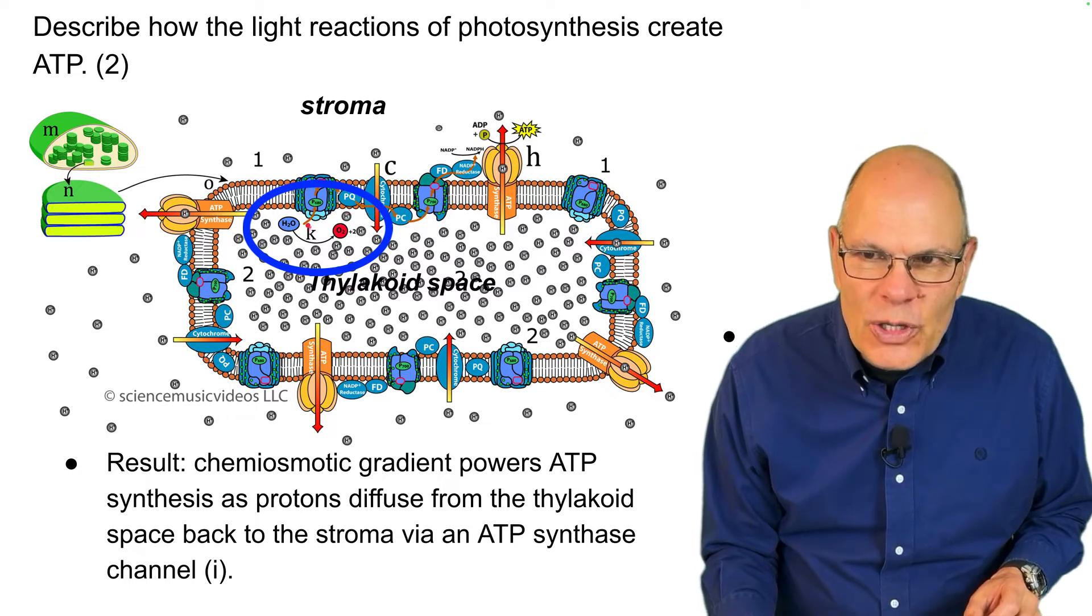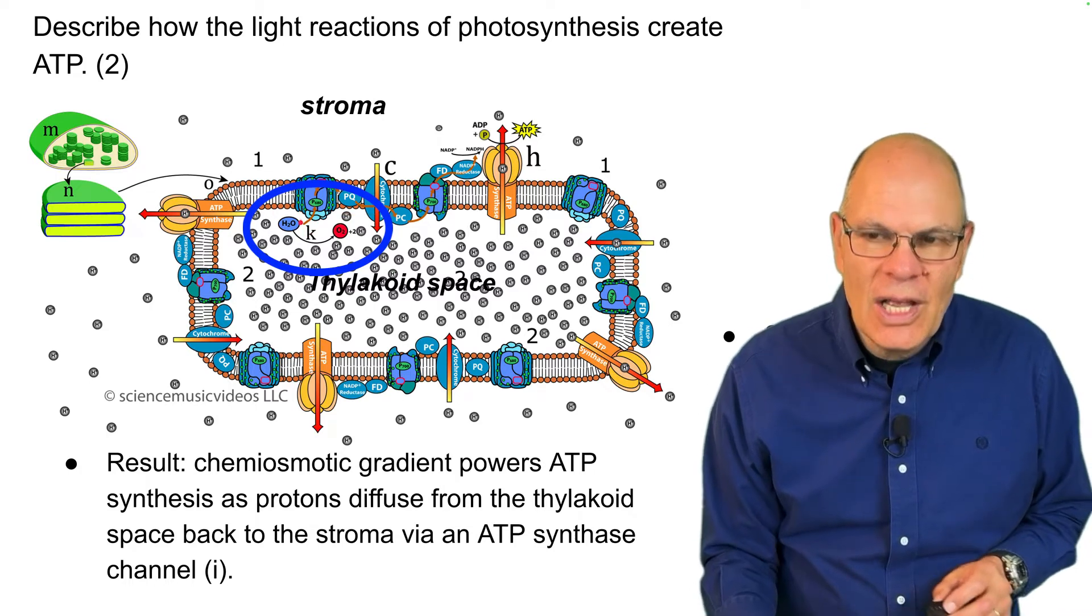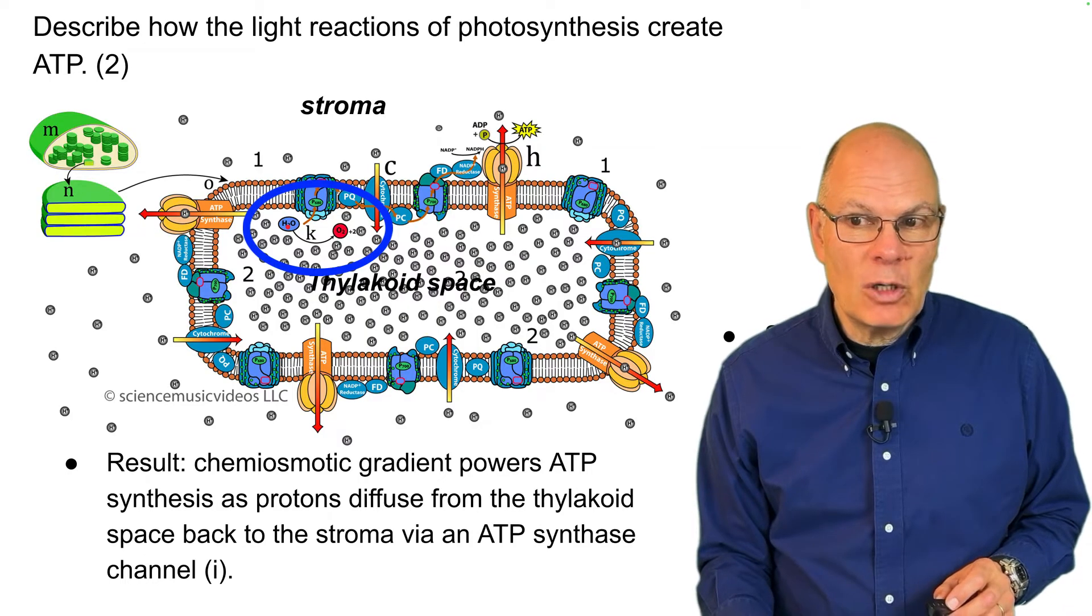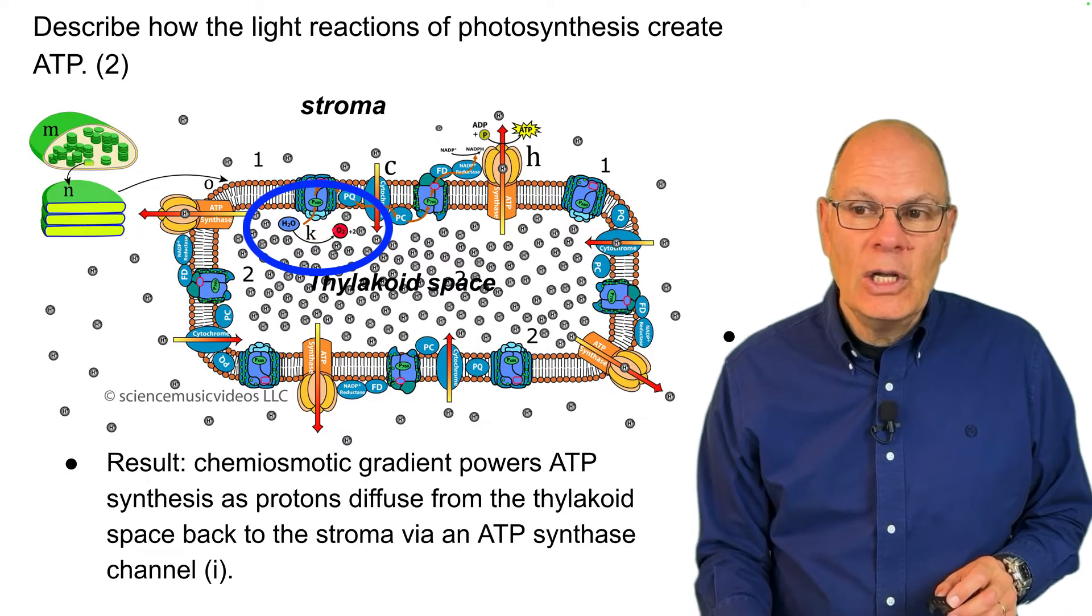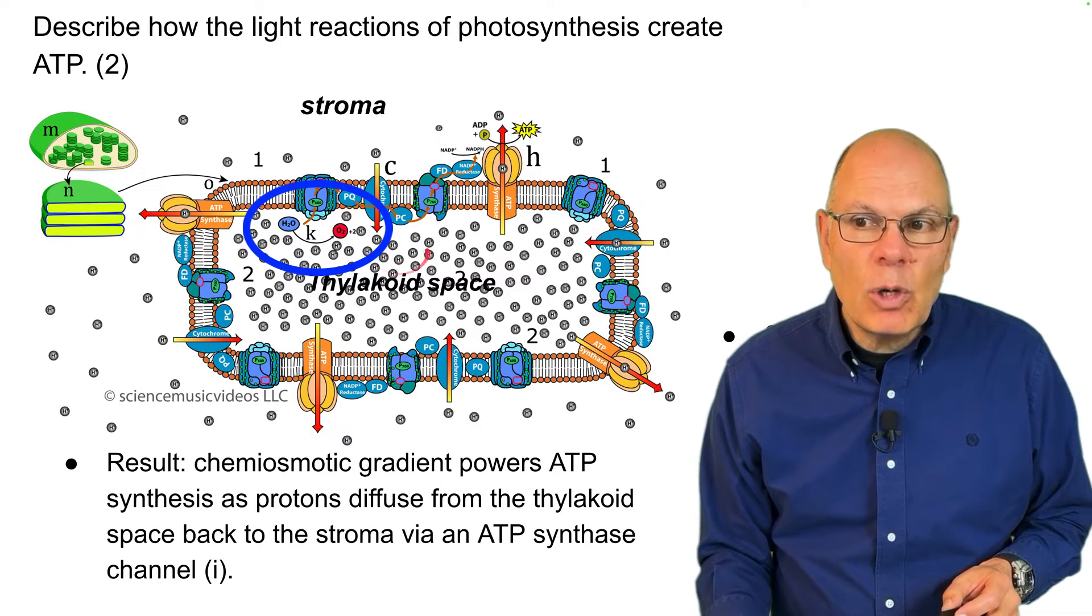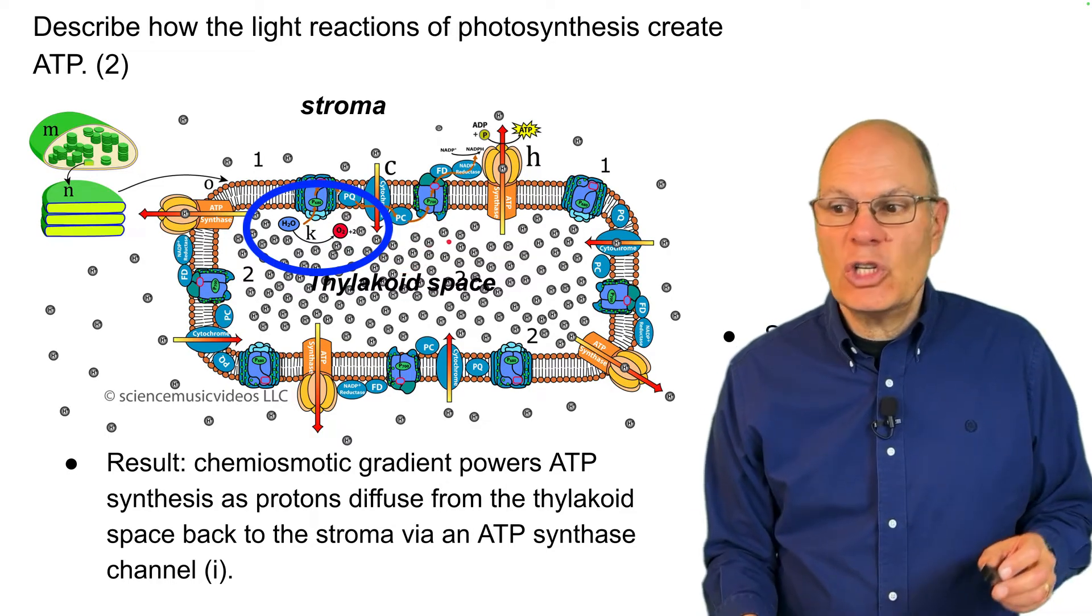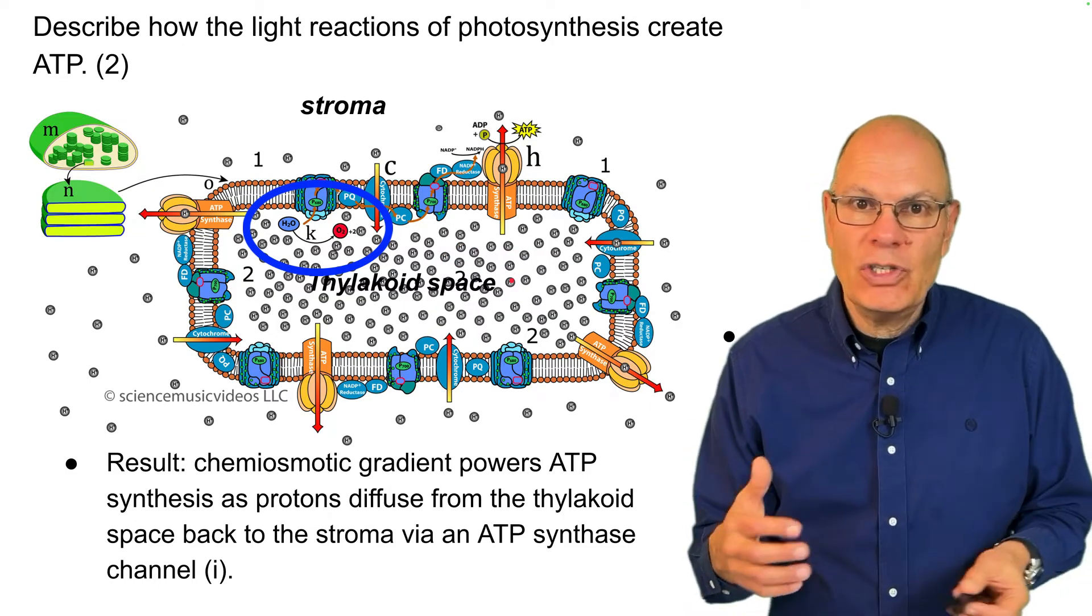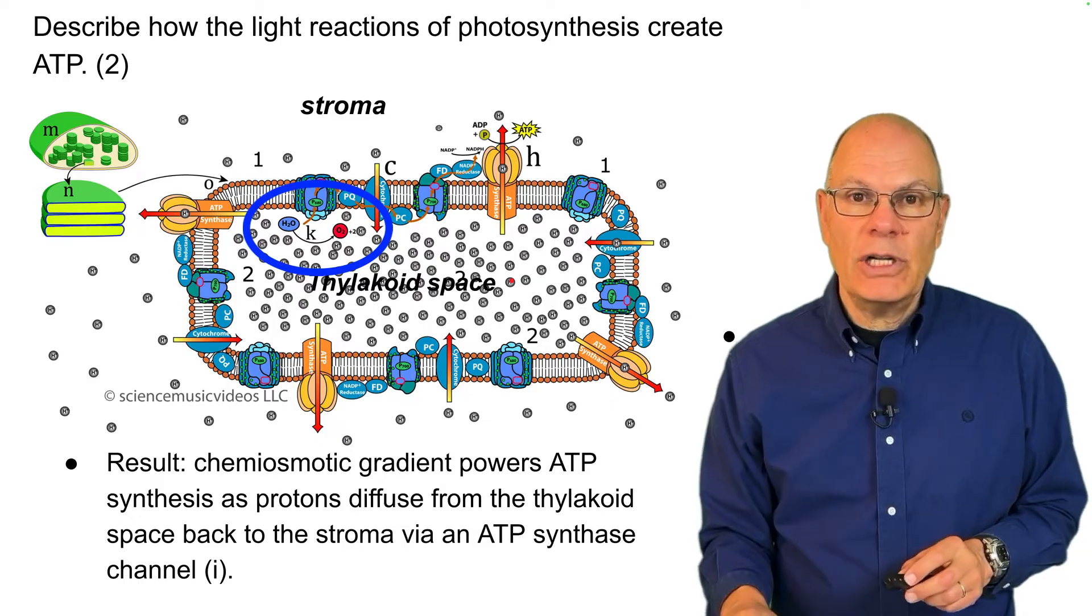Now note that there's also this water splitting complex that's part of photosystem II. And what it does is it takes water molecules, splits them apart to create oxygen, that's a waste product, but also to create protons. And those protons accumulate in the thylakoid space that enhances the gradient, and it powers additional ATP production.